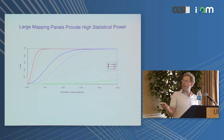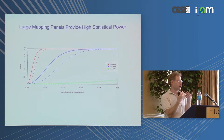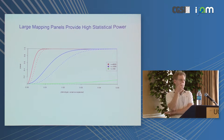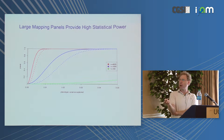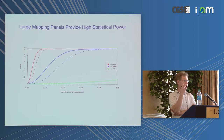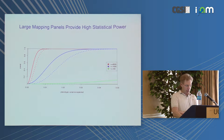The dotted lines show power for detecting interactions between two different genetic effects, which is obviously a harder problem, so the power is a little lower. But once you get into these sample sizes, you start to get decent statistical power even for interactions between pairs of loci.